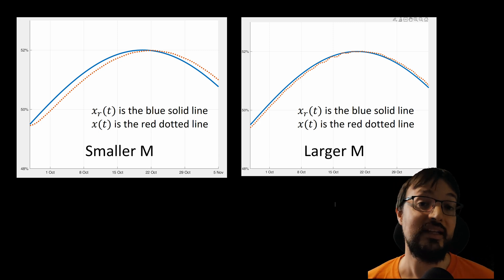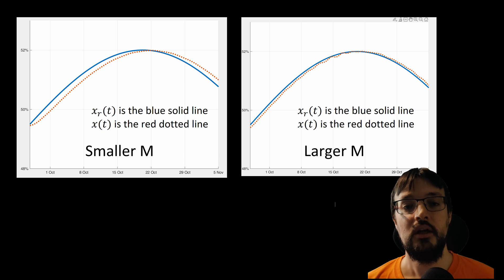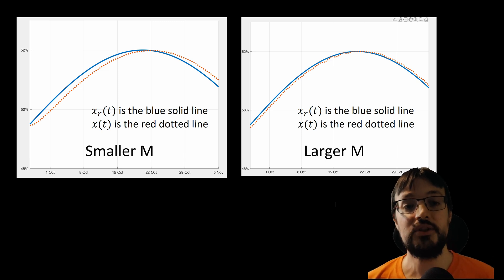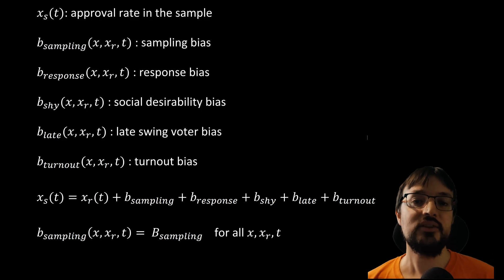Unfortunately, things are much more complicated than this. Pollsters have no way of actually measuring x_r(t), because they cannot interview the entire population. Pollsters have only access to a sample of the population. This means that they are not tracking x_r(t), the real approval rate of the entire population, but they are tracking a new variable, which I call x_s(t), which is the approval rate of the sample they are using. Let's try to model this x_s(t). X_s(t) is affected by numerous biases.